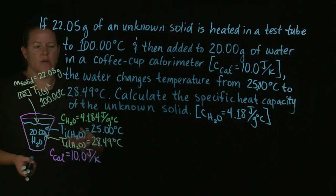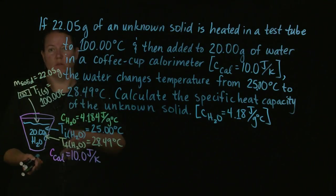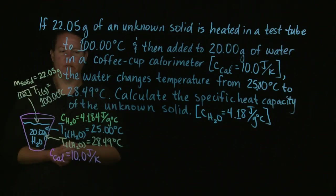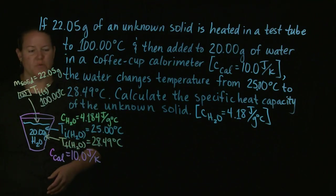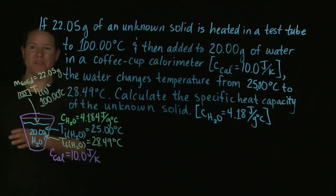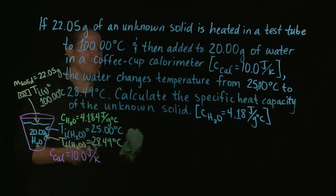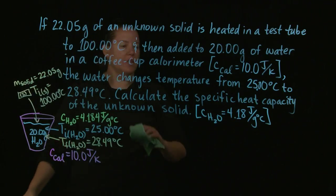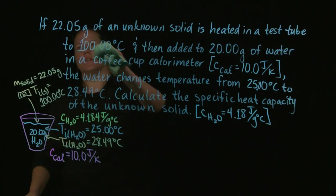Water is one calorie per gram degree Celsius. The conversion between one calorie and one joule is 4.184 — that's why I'm adding a little bit there. I need to calculate the specific heat capacity of the unknown solid.